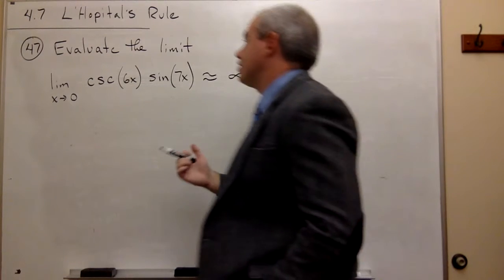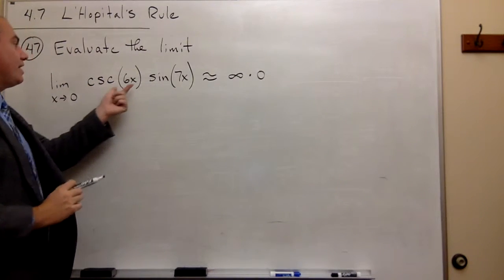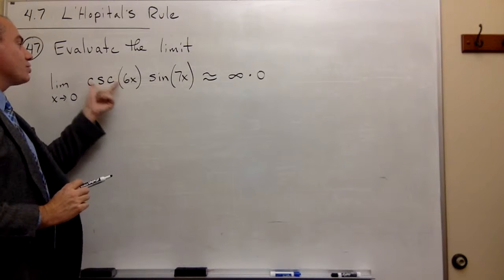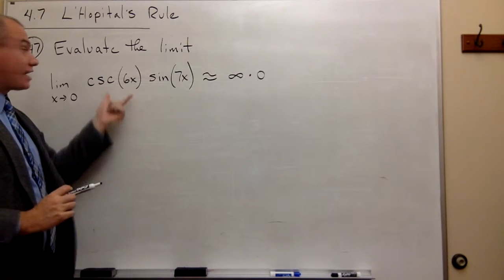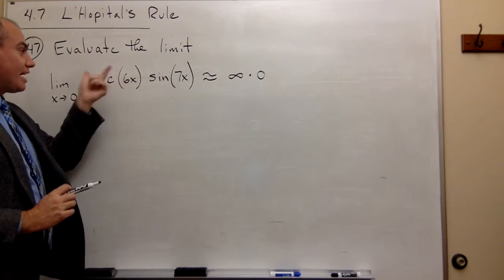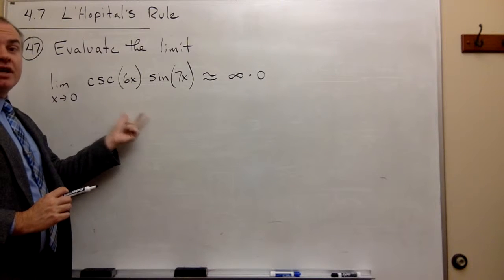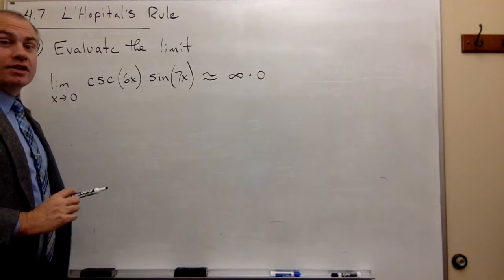Okay, so what I'm going to do is I'm going to recognize that cosecant of 6x is the same as 1 over sine of 6x. So I could throw this thing down on the bottom of the fraction and write it as a sine. So let's do that.